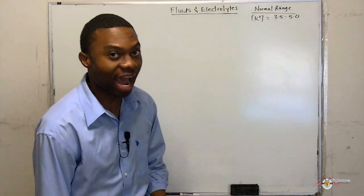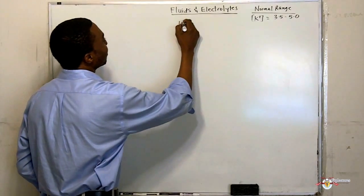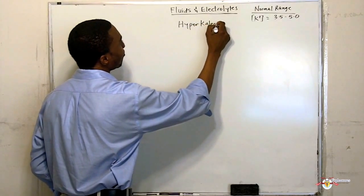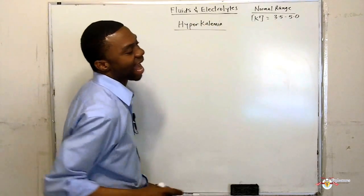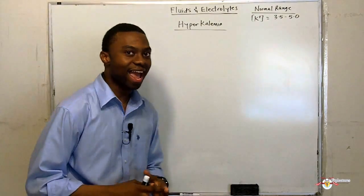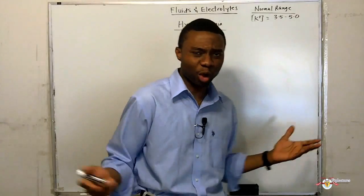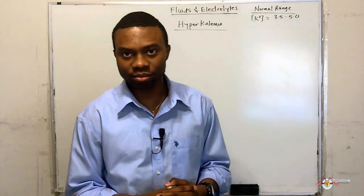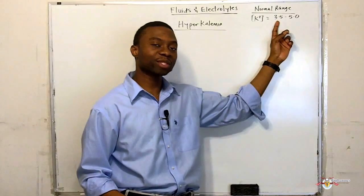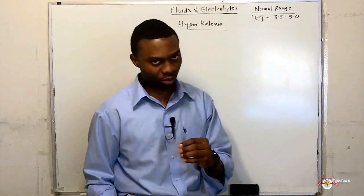Our next lecture is going to be on hyperkalemia. It is absolutely important that you understand this topic. Before we move on, what is normal potassium? The normal concentration of potassium ranges from 3.5 to 5.0.